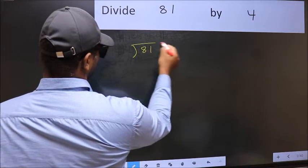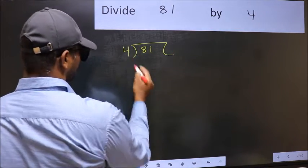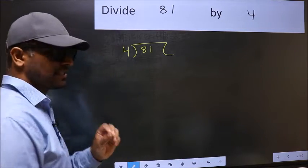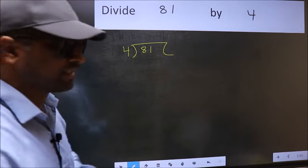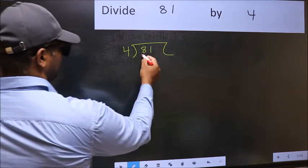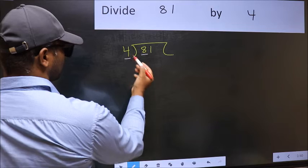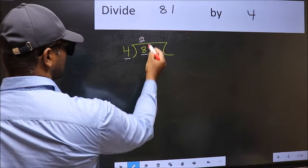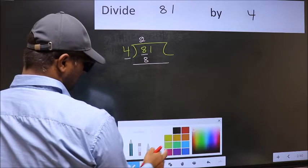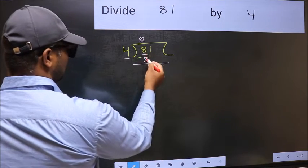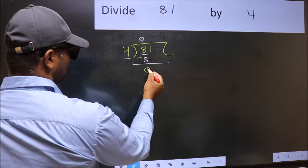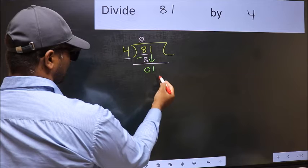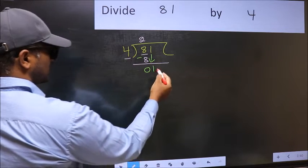81 and 4 here. This is your step 1. Next, here we have 8 and here 4. When do we get 8 in the 4 table? 4 times 2 is 8. Now you should subtract. 8 minus 8 is 0. After this, bring down the next number. So 1 down.